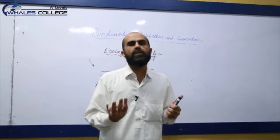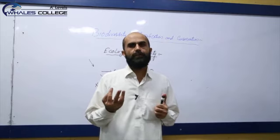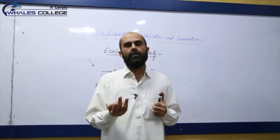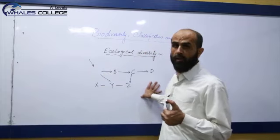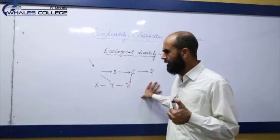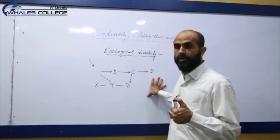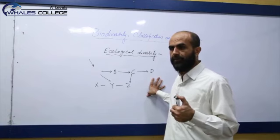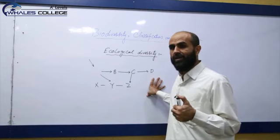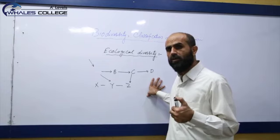We have discussed the three levels of biodiversity: species diversity, genetic diversity, and ecological diversity. That is all about biodiversity. In the next lecture, we will discuss the assessing of biodiversity — how we can calculate biodiversity. Thank you very much.